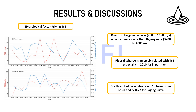Moving on to the hydrological factors that drive TSS, one of the major factors is river discharge. However, in this study it is found that river discharge is inversely related to TSS, especially in 2010 for the Lupa river. There is a weak correlation between these two variables — for example, in 2010, when the river discharge is at a high point, the TSS value is at a very low point.